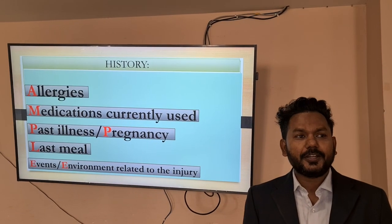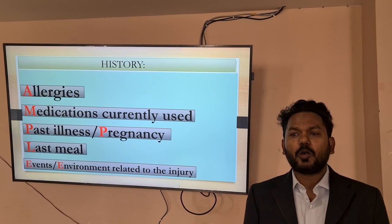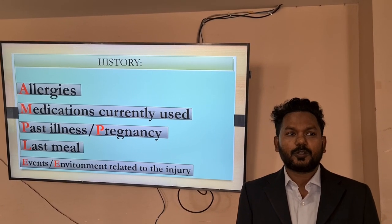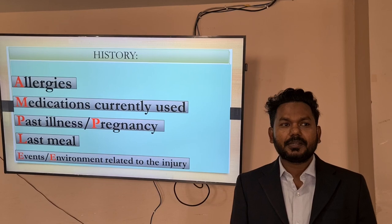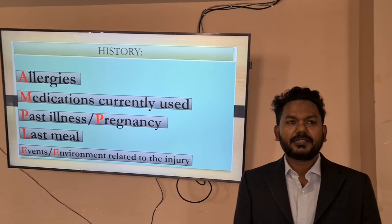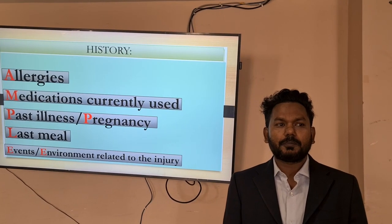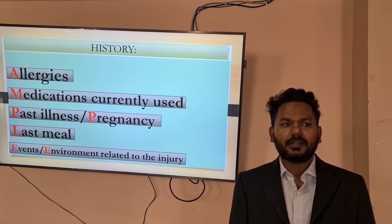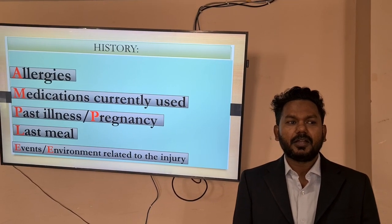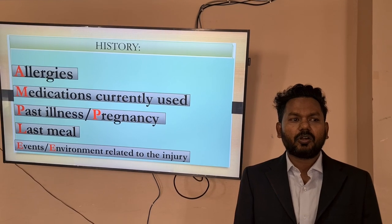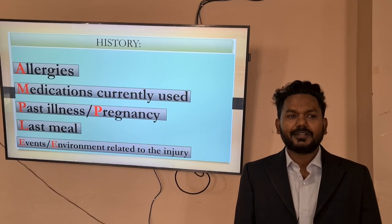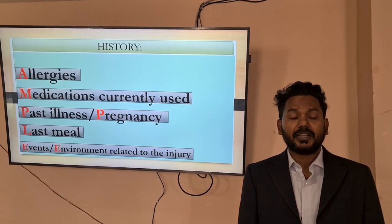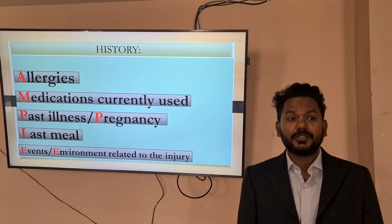In history, we need to know about AMPLE history: history of Allergies, Medications currently used, Past illness or pregnancy, Last meal, and Events or environment related to the injury — that is the mechanism of injury.